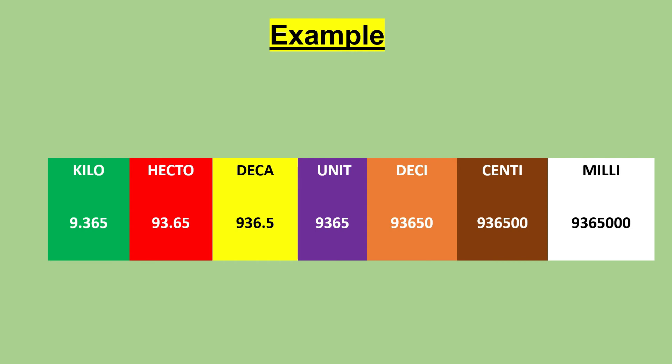You can convert to the next smaller metric unit by shifting the decimal point to the right, which is equivalent to multiplying by 10.